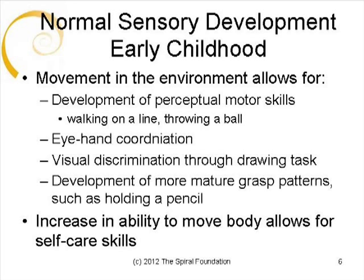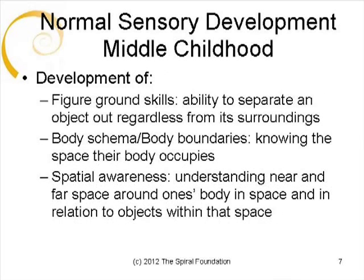As the child continues to move in their environment, they develop important gross motor skills such as walking on a line, throwing a ball, and eye-hand coordination. Fine motor skills such as visual discrimination, drawing tasks, and development of mature grasping patterns needed for more functional skills such as holding a pencil begin to develop. Increased confidence and mastery over their environment allows the child increased independence in completing self-care tasks such as dressing, feeding, and bathing. In school-age children, figure ground skills, body schema, and spatial awareness develop as sensory processing and motor skills mature.